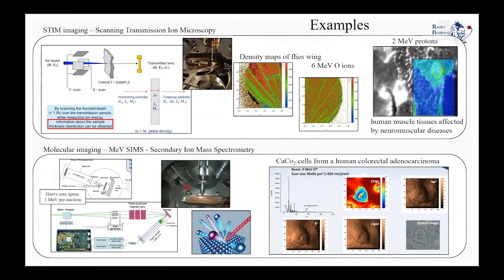You can see in the middle the density maps of a wing of a fly that we measured here in our laboratory, done with 6 MeV oxygen ions. In other applications, this is the study of human tissues — in the right picture you can see the microscope image overlaid with a colored STIM image of human muscle tissue affected by neuromuscular diseases, done with 2 MeV protons. One can observe the nice pictures that one can get using STIM microscopy.